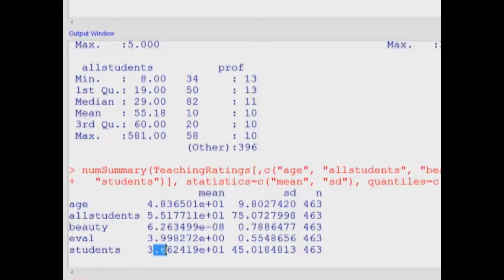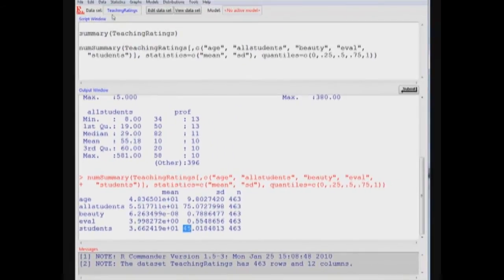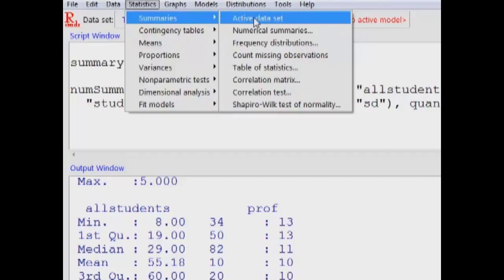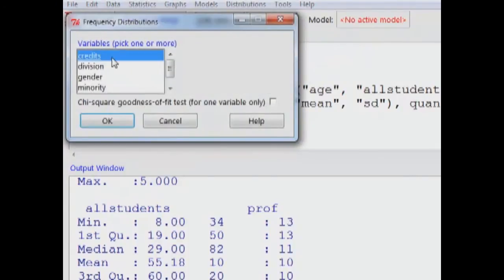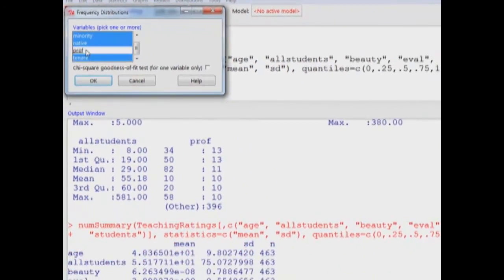On average, 36.6 students responded to the survey, and the standard deviation is 45. Now, what to do with the factor or categorical variables. You can select Summaries, Frequency Distributions, and then we click all of these with the exception of prof. So control, select prof, and that's off, and everything looks fine, and here we go.